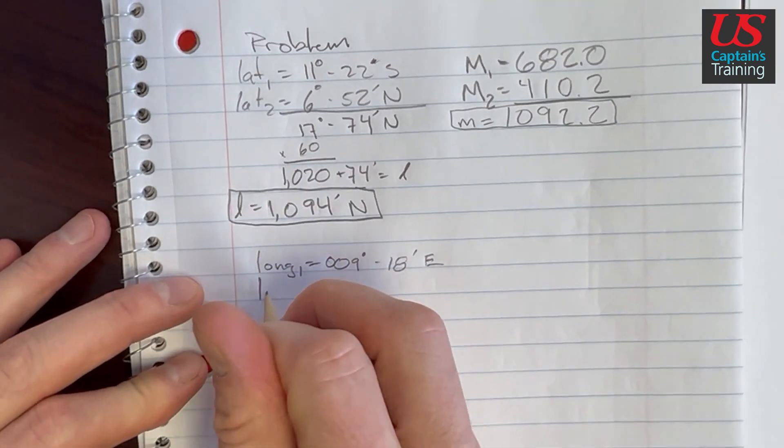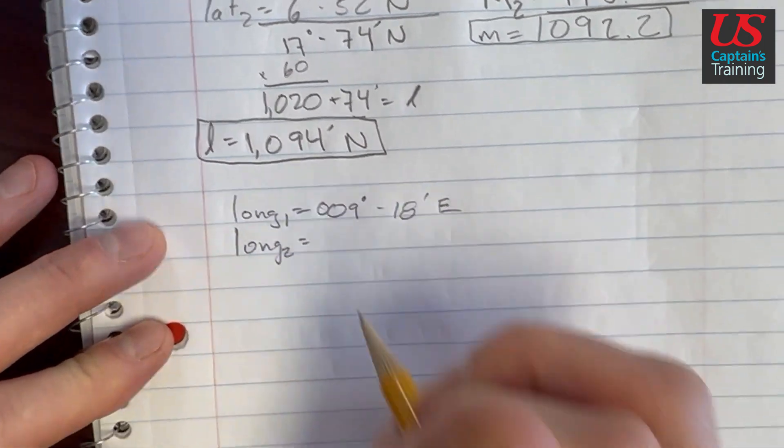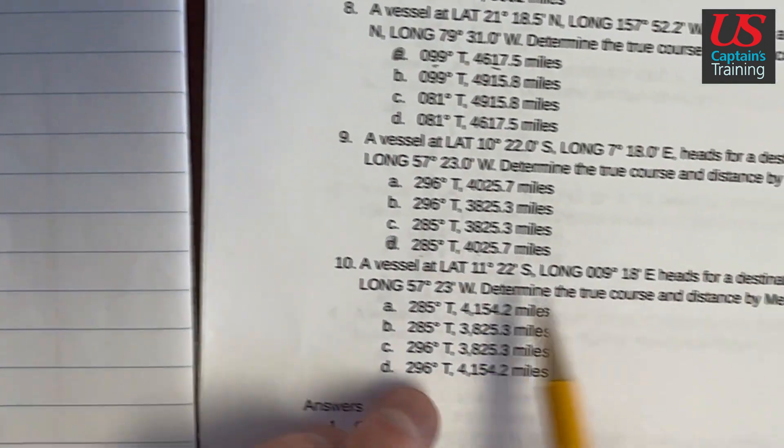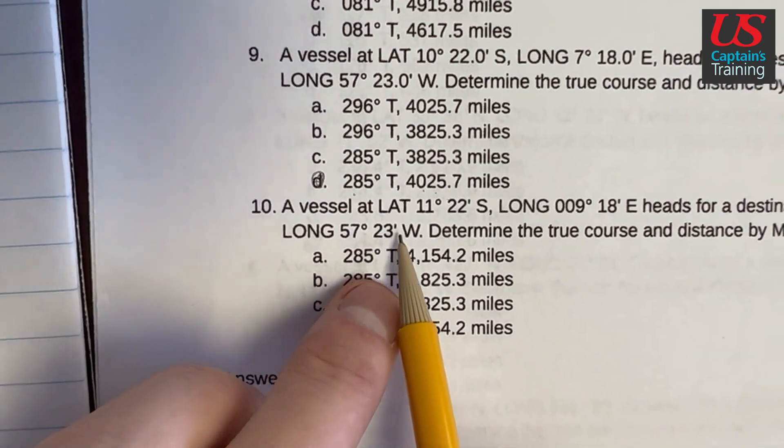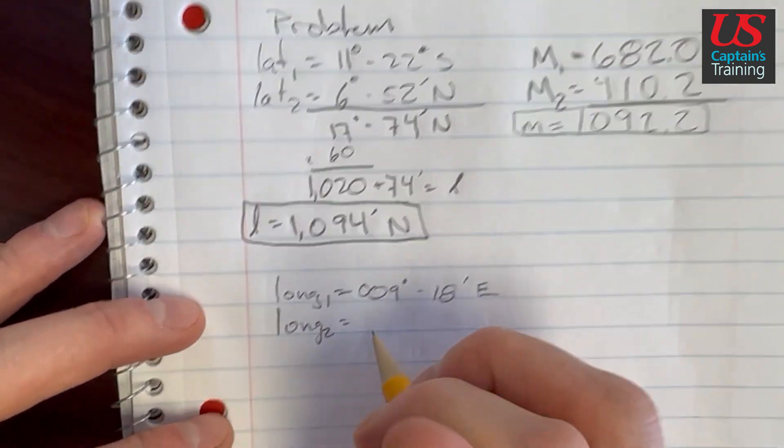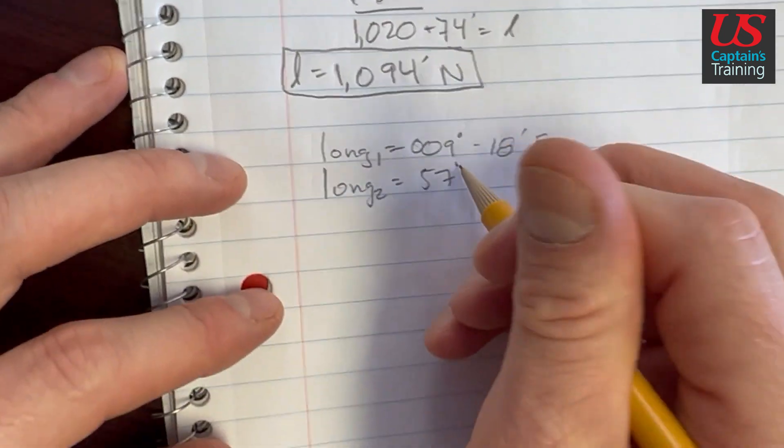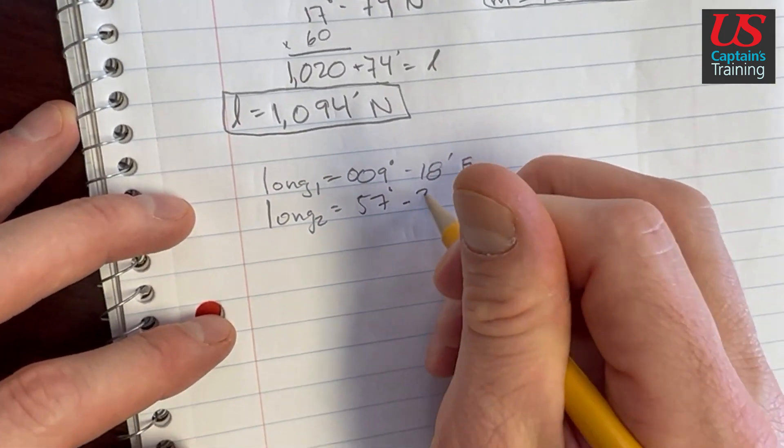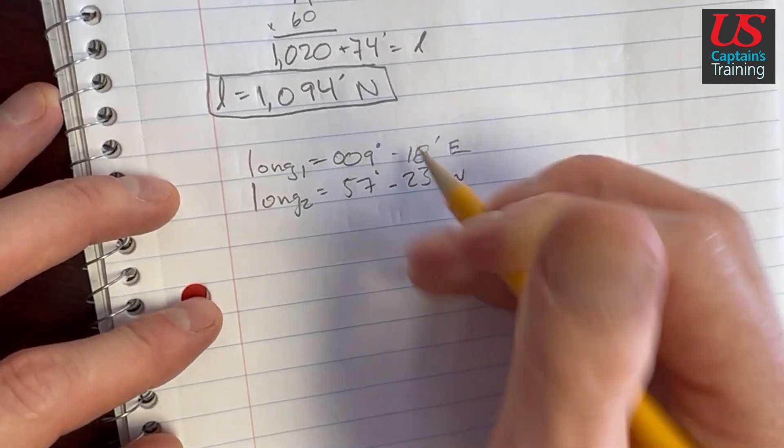Longitude 2, 57 degrees 23 minutes west. So it's 57 and 23 minutes west.